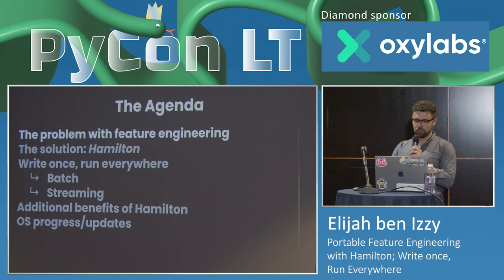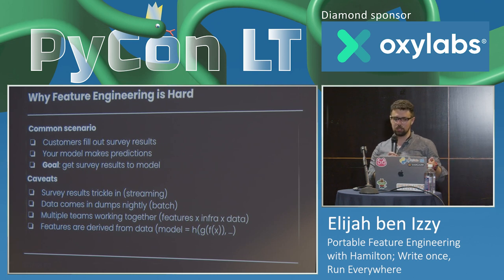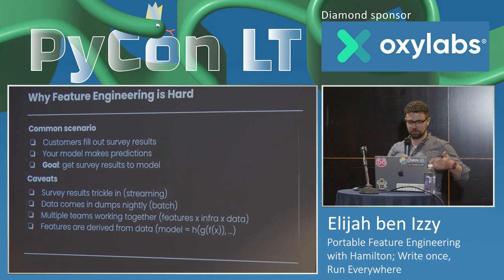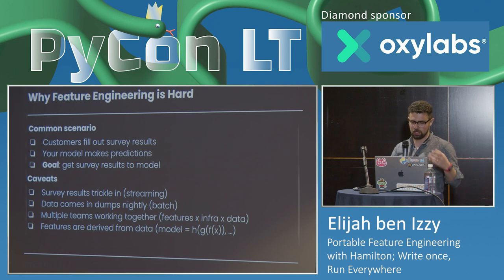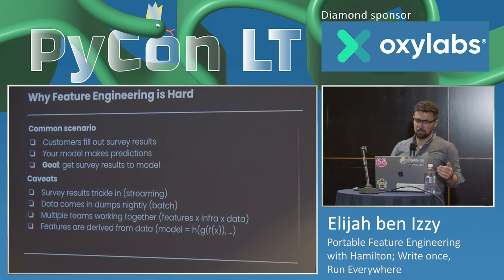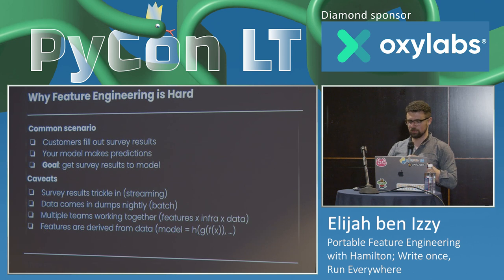So why is feature engineering hard? Let's look at a common scenario — this actually comes from my old company, so it's a real life thing. Customers fill out a survey when they sign up for your platform, and your model makes predictions. We could be predicting their lifetime value as a customer, or whether to show them the best inventory. Your goal is to get the survey results to the model you've trained so you can run predictions and serve them for the customer.